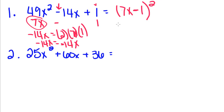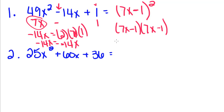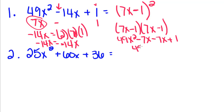And if you want to check this, remember that when we have a quantity squared, we have to FOIL it out. So: 49x squared minus 7x minus 7x plus 1. And that is the same thing as what we started with.